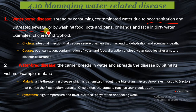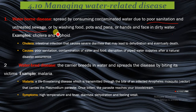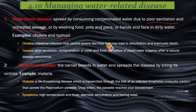Waterborne diseases are spread by consuming contaminated water due to poor sanitation and untreated sewage, or by washing food, pots, pans, or hands and face in dirty water. Examples of water-related diseases are cholera and typhoid.